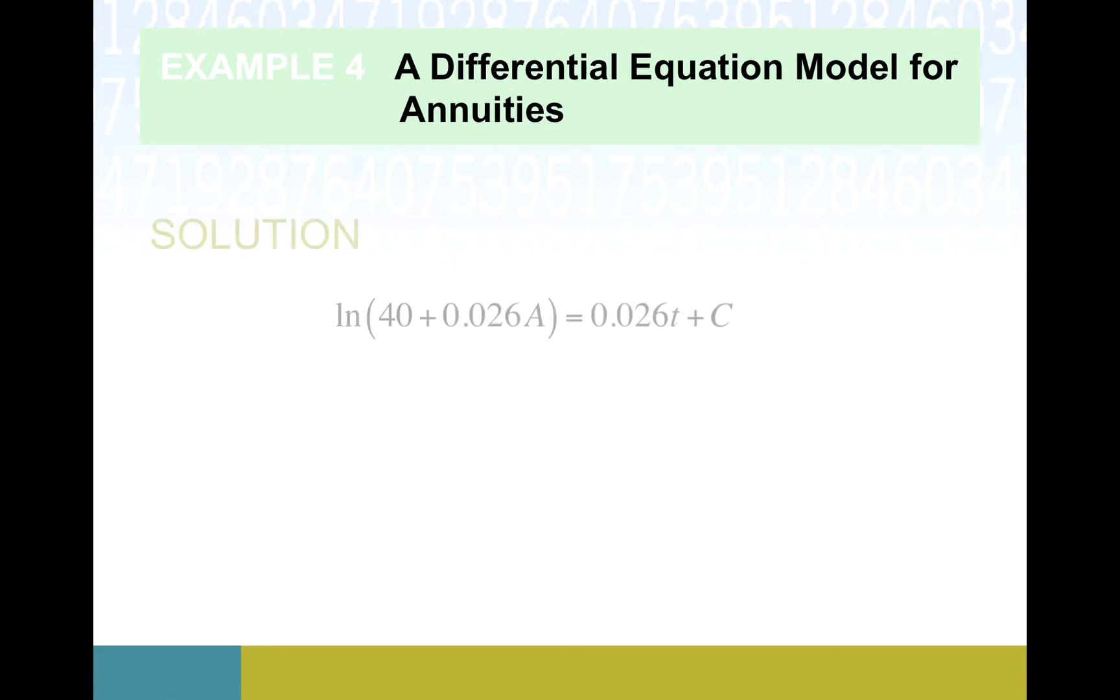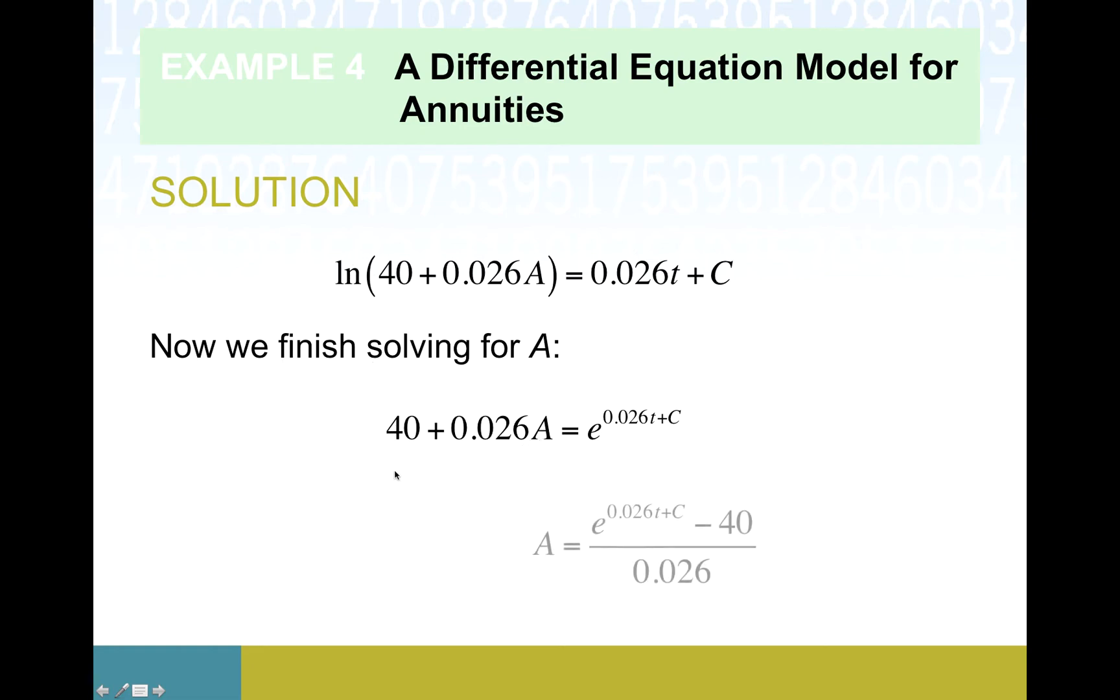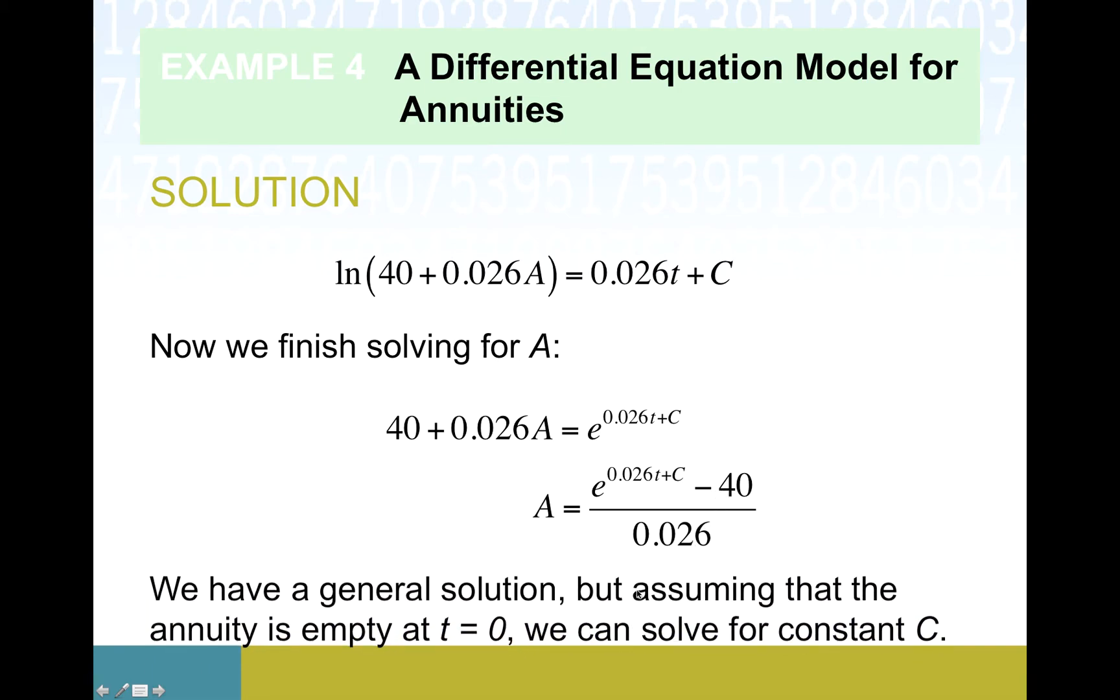So, then, next, we haven't really finished getting an actual expression for A. We don't really have an A equals kind of situation. So, let's work the algebra on that real quick just to make that happen. So, we're going to take E to both sides to cancel out this natural log. So, we'll take away 40 from everybody, and we'll divide out this 0.026 to get on the bottom. So, this is what we would call a general solution, but this isn't usually good enough until we find an actual value for C.